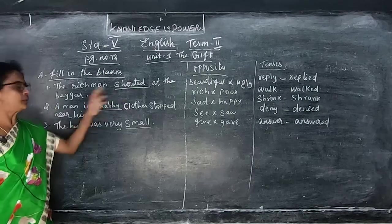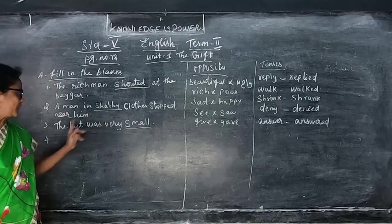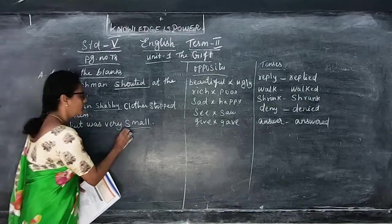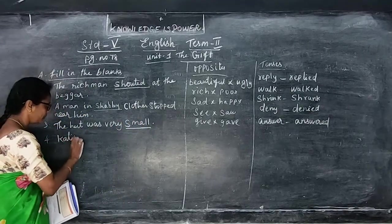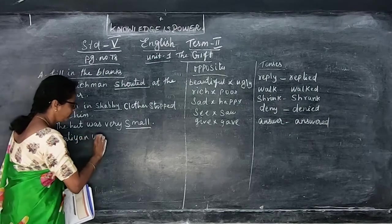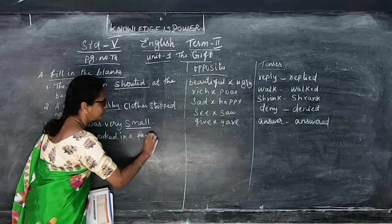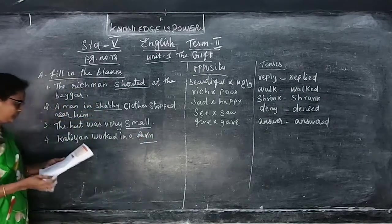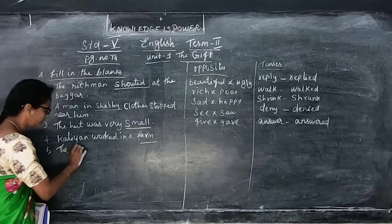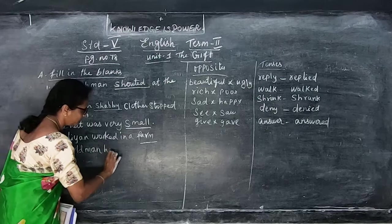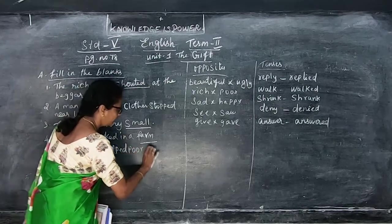The rich man shouted at the beggar. A man in shabby clothes stopped near him. The hut was very small. Kalyan worked in a farm. The old man helped the poor and needy.